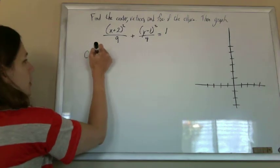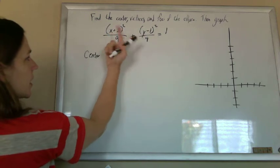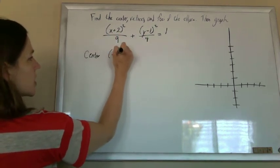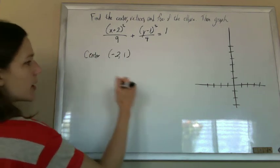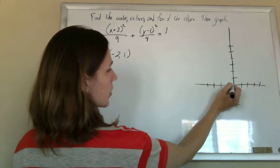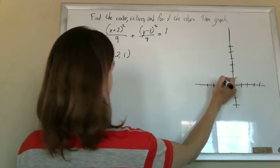So the center, we're just going to pluck the center right out. It's going to be negative 2, 1. So just change those signs. Negative 2, 1 is the center. And I'm going to go graph it as I do it. So negative 2, 1 is my center.